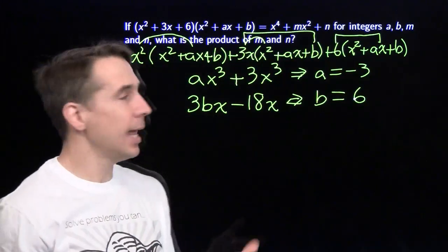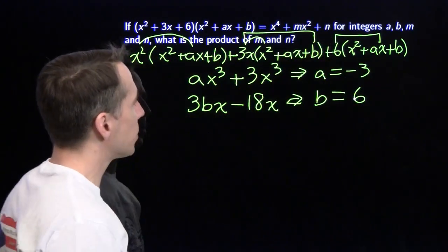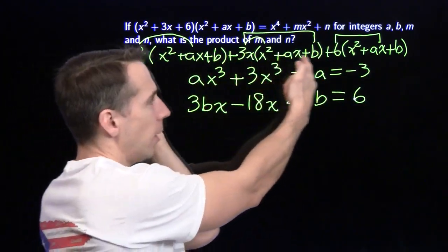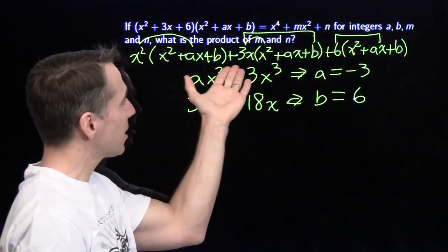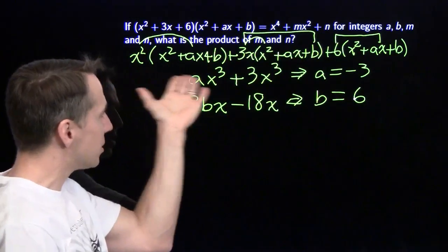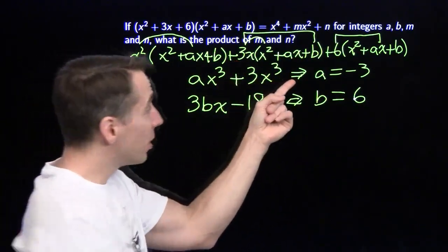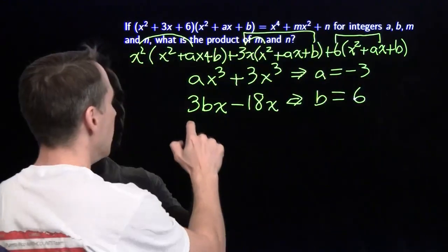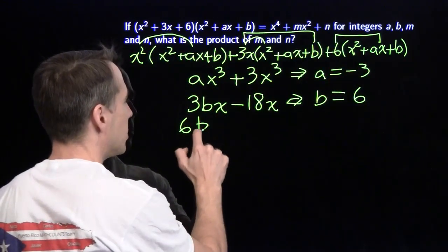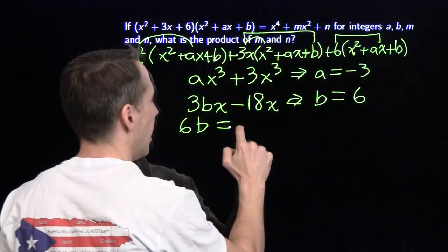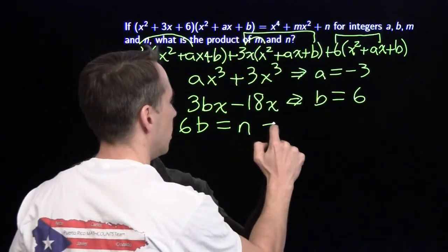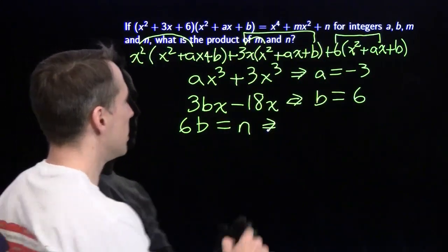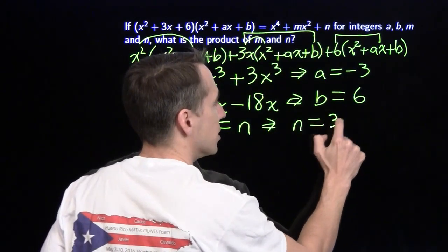So I figured out a and b. Let's focus on m and n. We see where the n is. That one's pretty simple. The only place I'm going to get a constant when I multiply all this out, everything's going to have an x in it. Everything here is going to have an x² at least in it. Everything here, you've got that x sitting there. The only place we're getting a constant is right there. That's 6 times b. So we know that 6 times b is n. So that tells me that n is 6 times 6. N is 36.